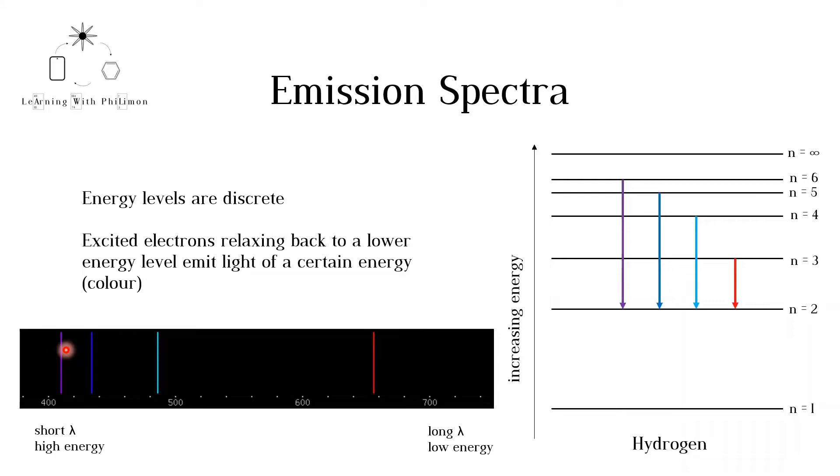Although hydrogen is shown here as an example, the energy of different energy levels actually differs between different elements. So the transition from n equals 3 to n equals 2 will give off a different color depending on the element.